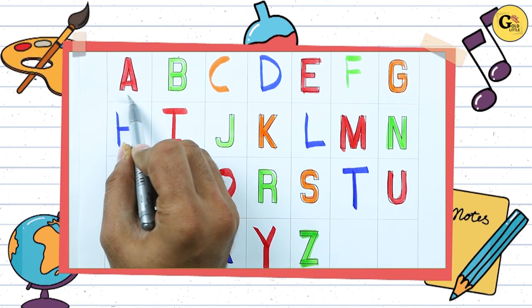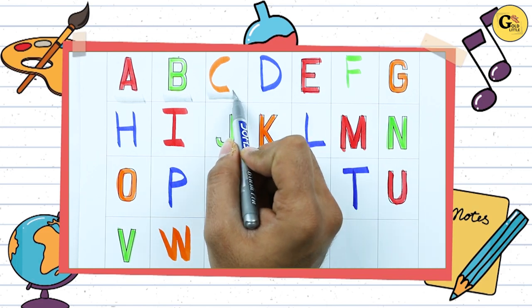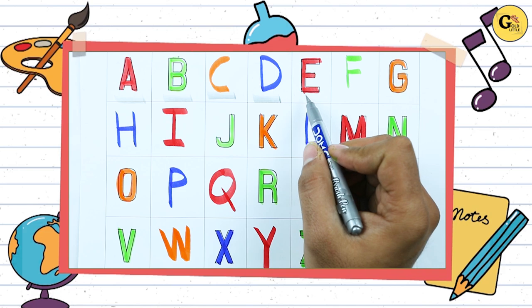A. A for apple. B. B for ball. C. C for cat. D. D for dog.